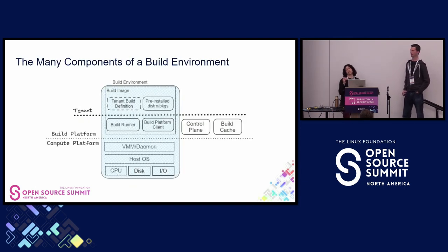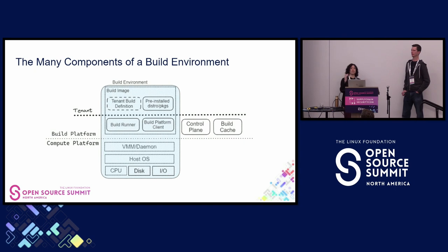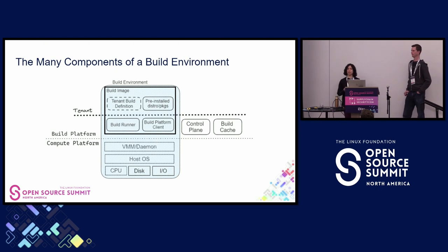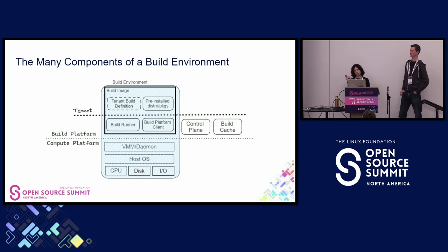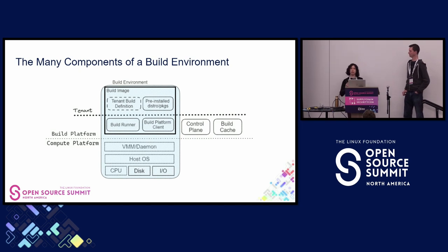We want to set some terminology for what we're referring to today. The build environment really has many components — the entire software and hardware stack. We tend to think of the build environment as the build image that's actually running the build in CI. That covers a fair amount of components we largely take for granted. As tenants of these systems, we really only have control over a small subset — many different third-party and first-party components that are difficult to audit.